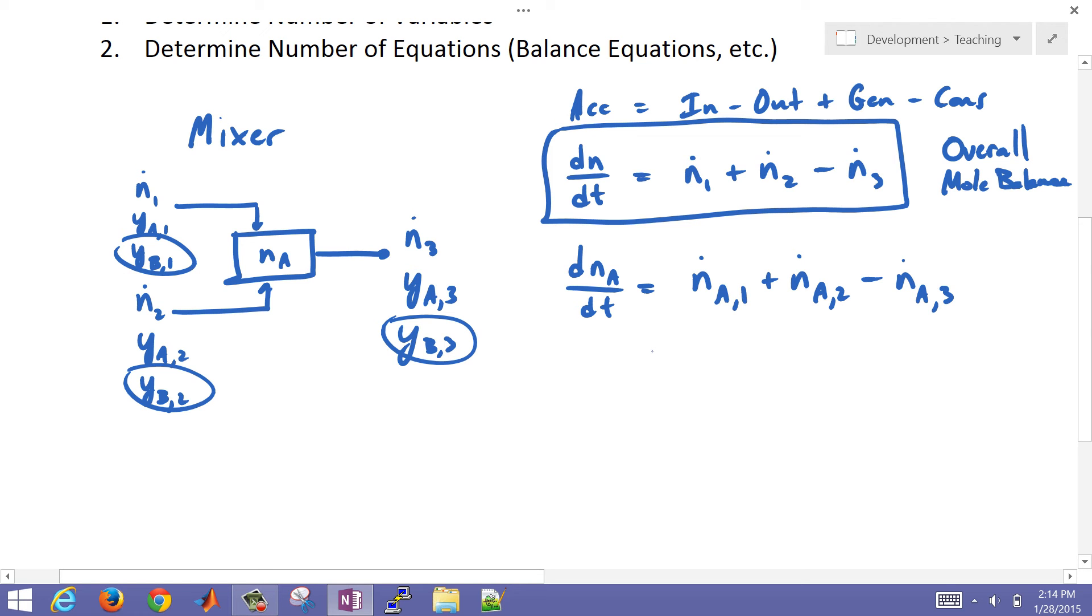But we know that the number of moles times our mole fraction is going to be this holdup n_A. And we could also do that for flow rates as well. If we put the dot there, then those become flow rates. So I'm just going to substitute that in now for these.